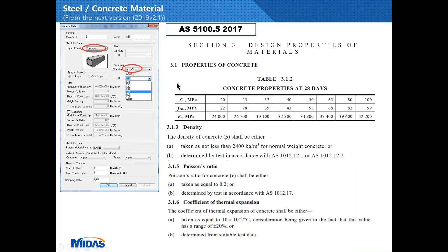We are exactly following Australian Standard AS 5100.5 2017. You can see Table 3.1.2, concrete properties at 28 days. The name is exactly the same as compressive strength, starting from 20 and ending at 100. We have 8 materials, exactly the same. Density, Poisson's ratio, and coefficient of thermal expansion values are all using the same values from the code.